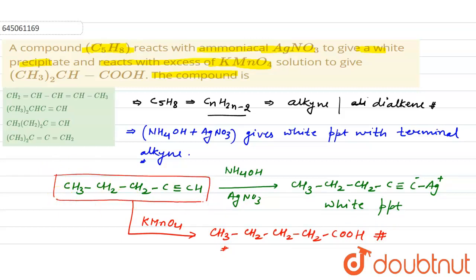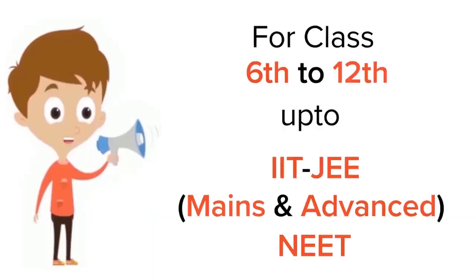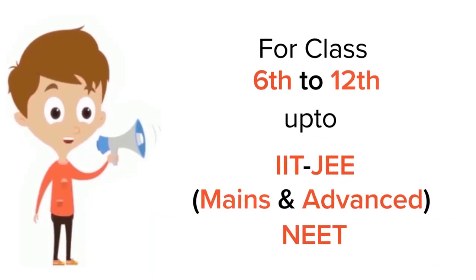So our initial compound is the terminal alkyne. This is our answer. Let's see in the options - first option is dialkyne, it's wrong. The second option represents not a straight alkyne, but the third option represents the correct answer. So our answer is third. Thank you so much.